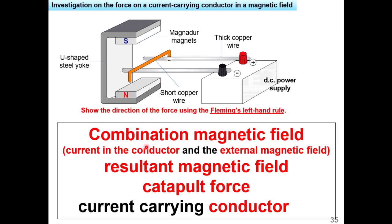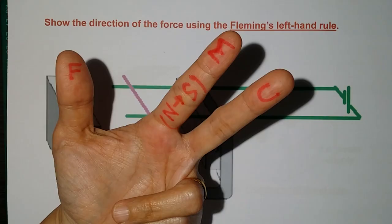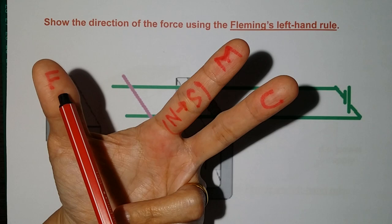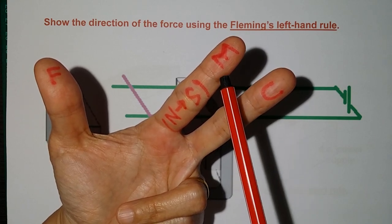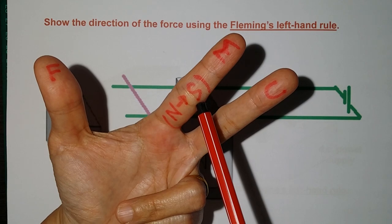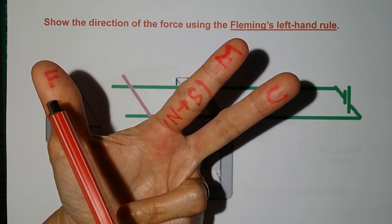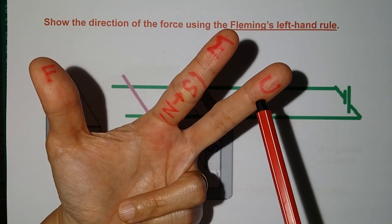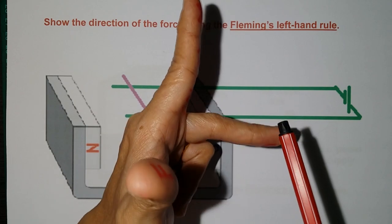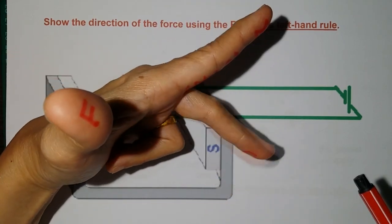Remember the key concept: the combination of the magnetic field due to the current in the conductor, and the external magnetic field due to the magnet, will create a resultant magnetic field that creates a catapult force that pushes the current-carrying conductor. The direction of current, the catapult force, and the magnetic field direction (from north to south) can be shown in a diagram. All three fingers must always be 90 degrees to each other.